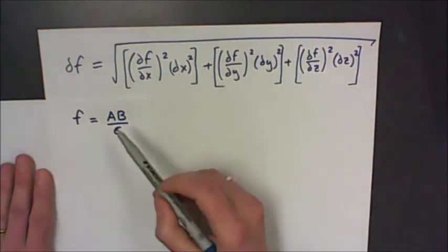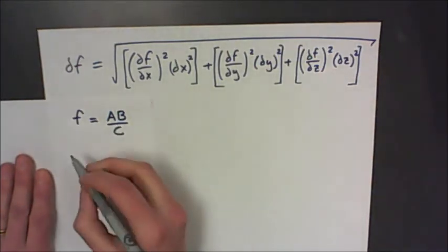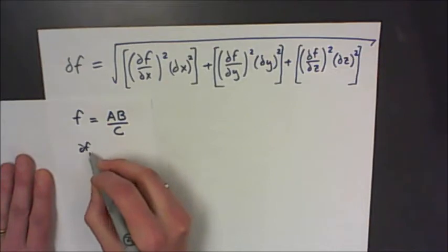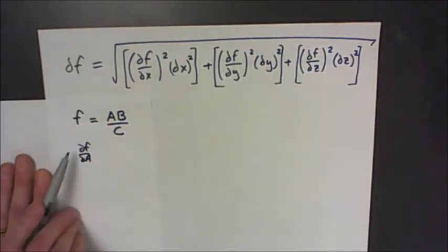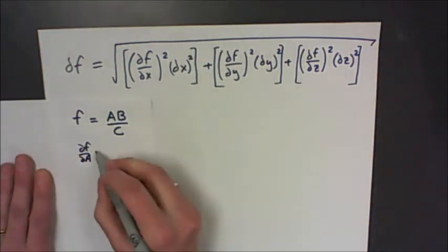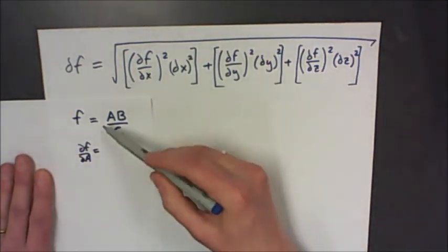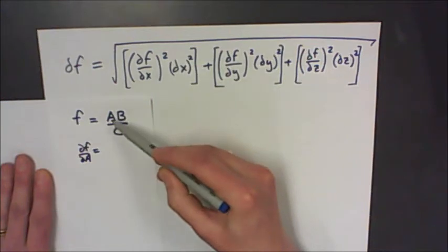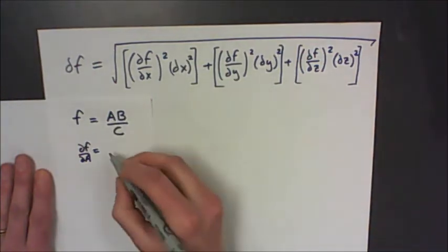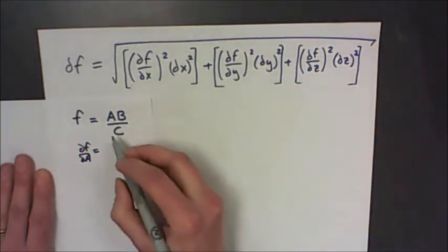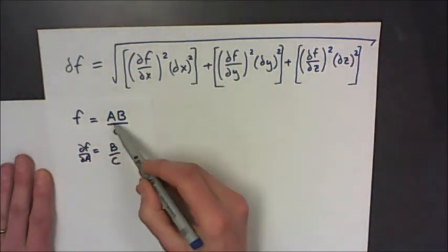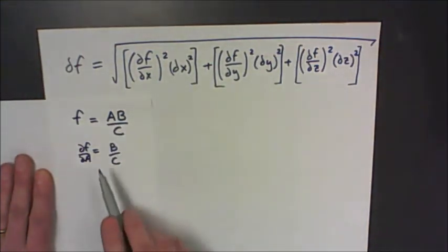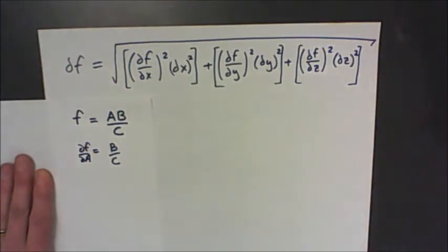I'm going to take the derivative of f with respect to a first. When you're doing a partial derivative, we have a slightly different symbol for the delta. I'm going to treat the expression as if b and c are constants and a is the only variable. So my derivative would be b over c, because the derivative of a is just going to be one — so this is one times my two constants.